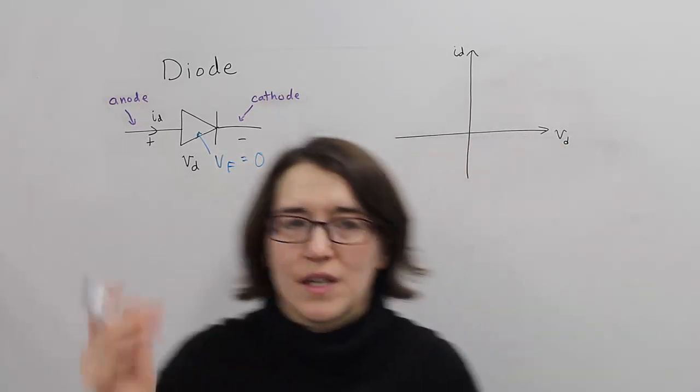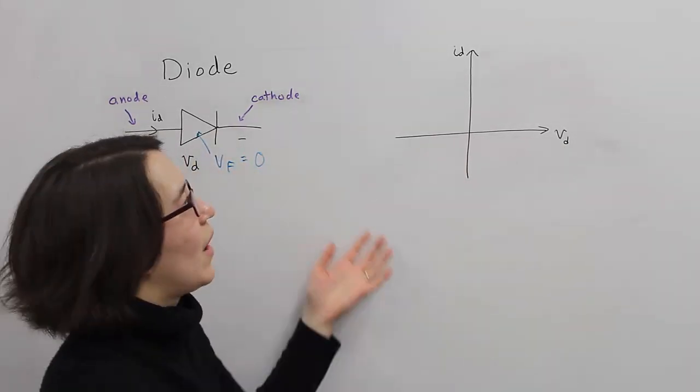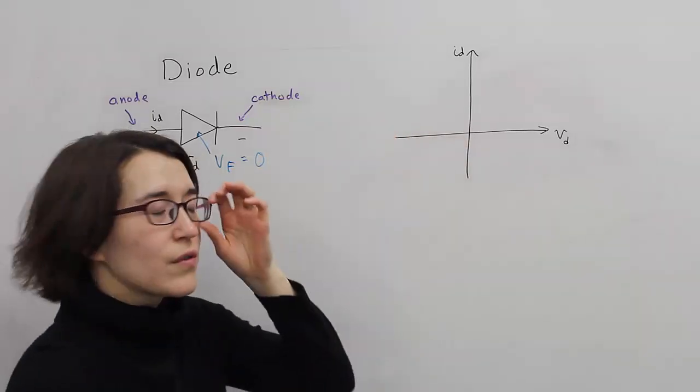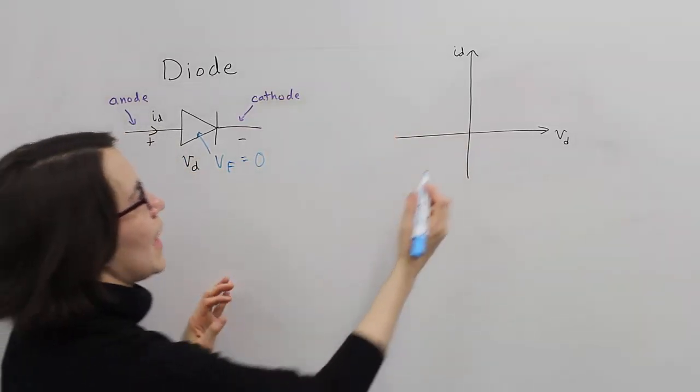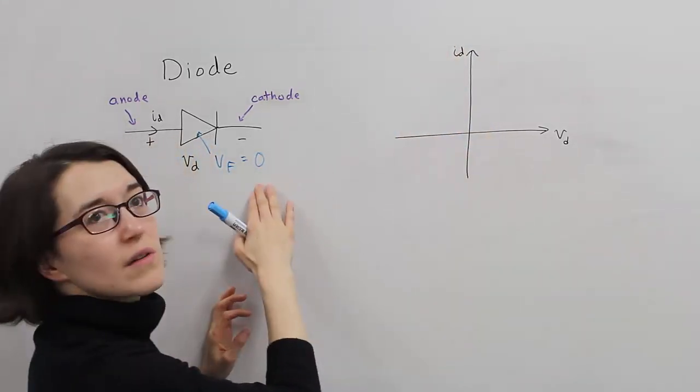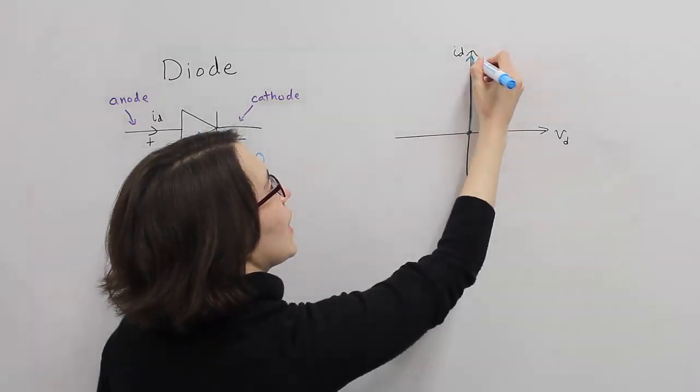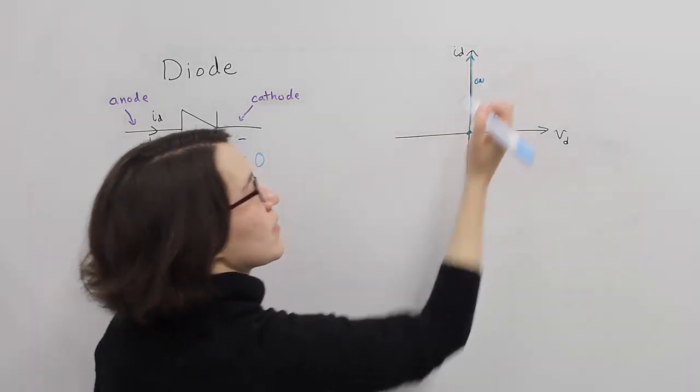So let's draw that first. We can represent the operation of the diode on this voltage current curve. And we know that when it's on, for any current, the voltage here will be zero. So that's represented here. And we call this, we say it's on. It switches on.